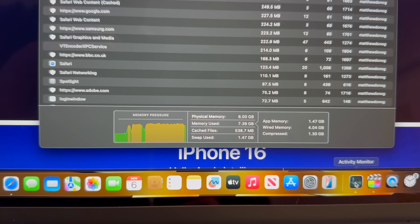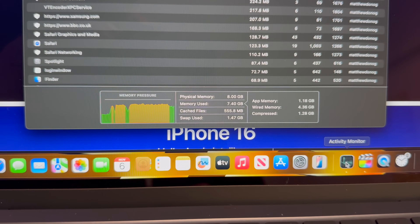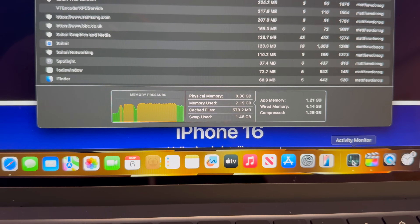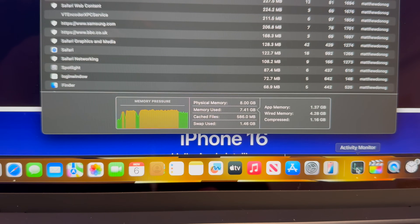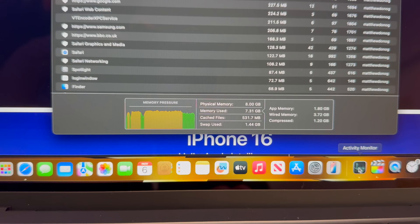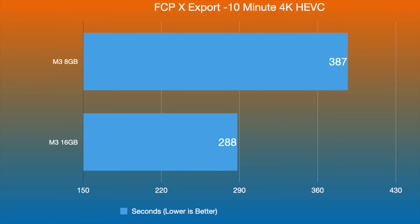Then the memory pressure on the 8GB model hits yellow — we're using almost the full 8 gigabytes. The difference in export times is very visible: it took 387 seconds on the 8GB model versus 288 seconds on the 16GB model. That's roughly a 25% difference in export speed when multitasking with 10 Safari tabs open simultaneously.